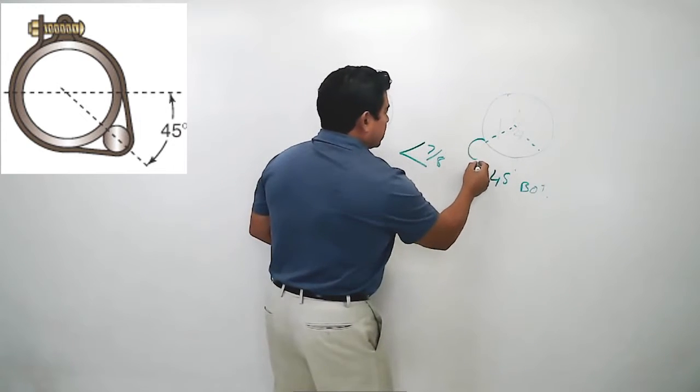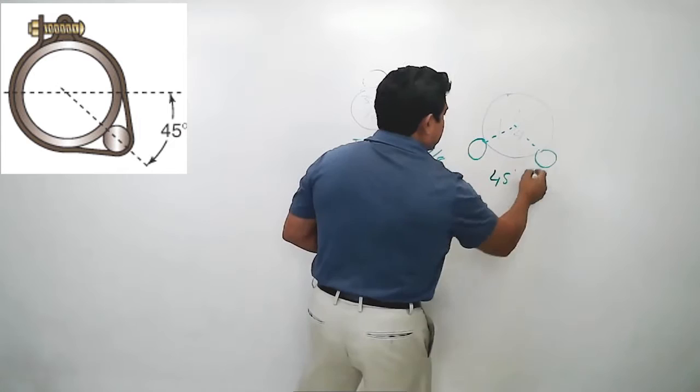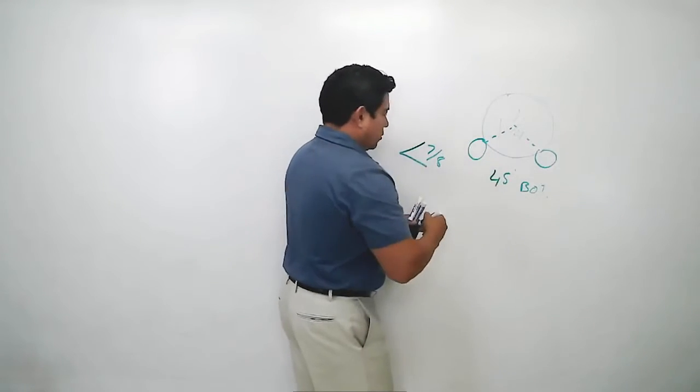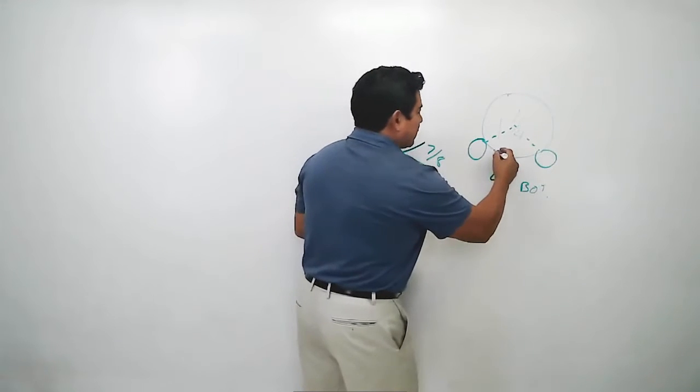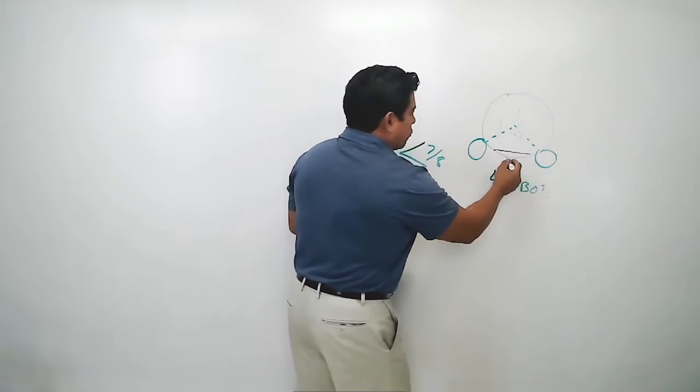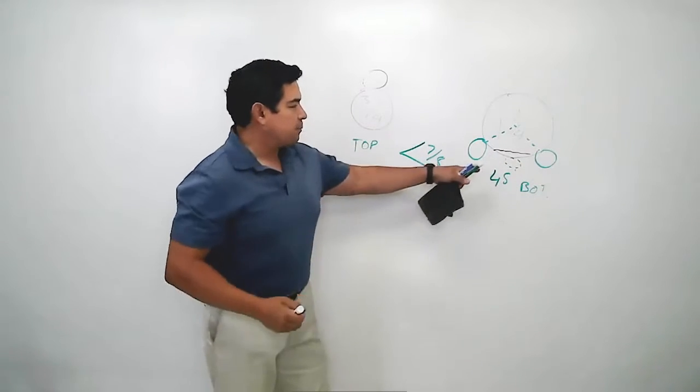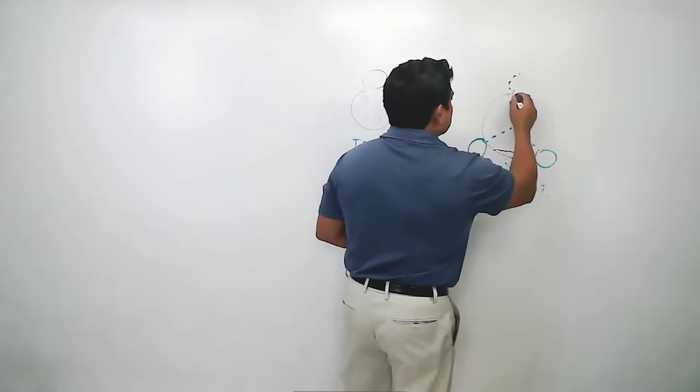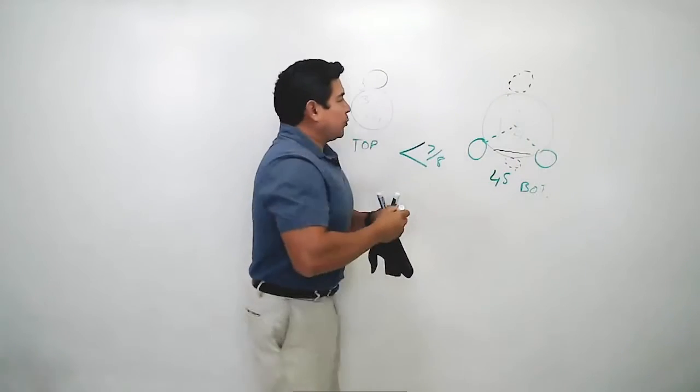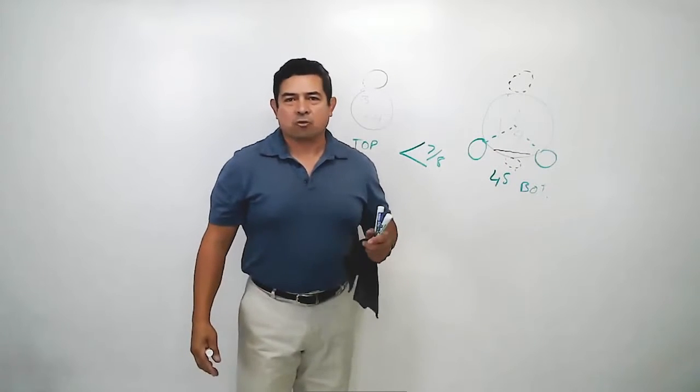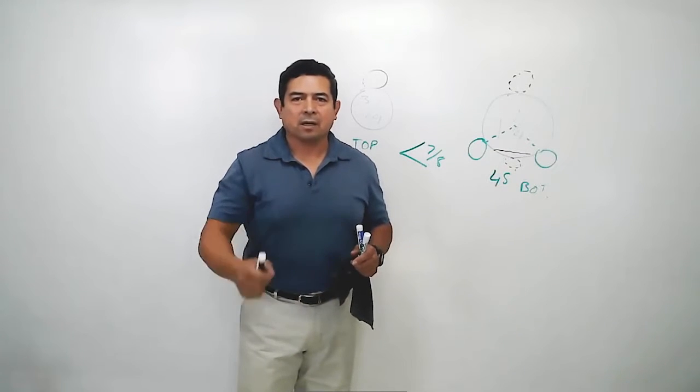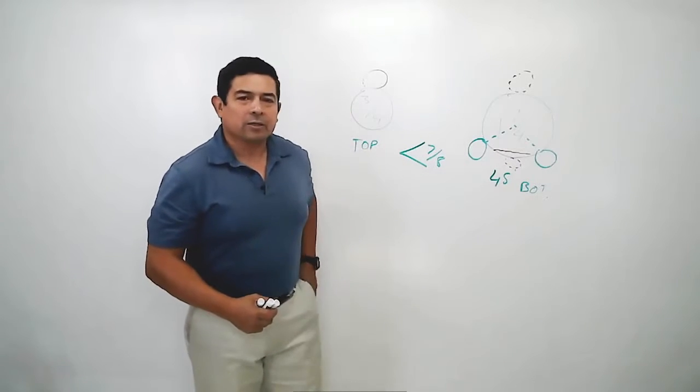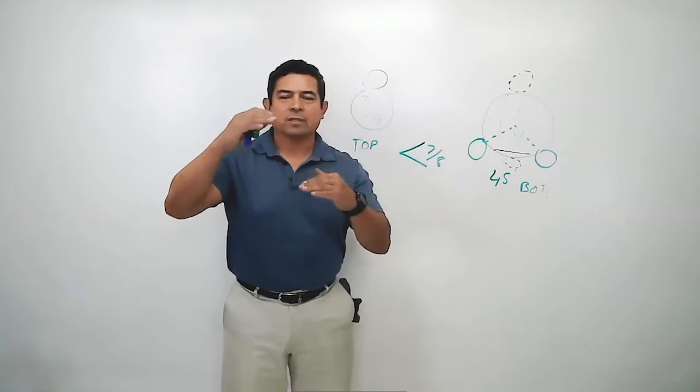The reason we do that is because traveling with the refrigerant, we might have some oil. So we don't want it down here because then it's going to be sensing the temperature of the oil. Also, we don't want it up on top either. The reason for that is because of stratification. Stratification is when you have layers of gases or layers of liquids, layers of fluids.